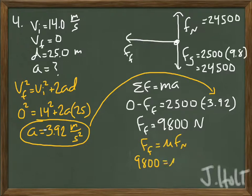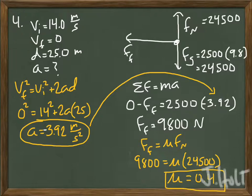Now that we know that, we can plug that into our definition of the force of friction, mu times the normal force. Knowing what the normal force is, we can solve for mu. And you want to make sure that mu is a number between 0 and 1.